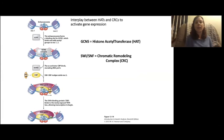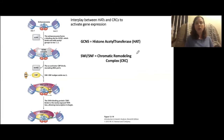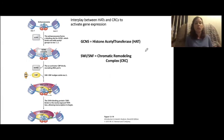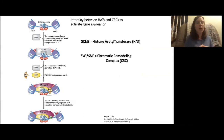This figure ties everything together. We have our two different chromatin remodeling processes — SWI-SNF and histone modifications. What I want you to walk away with is that gene expression happens through a combination of chemical modifications — HATs, HDACs, adding or removing methyl groups — and SWI-SNF physically moving nucleosomes to make space for transcription machinery. It's not an either/or situation; it's both of them working together to modify gene expression.